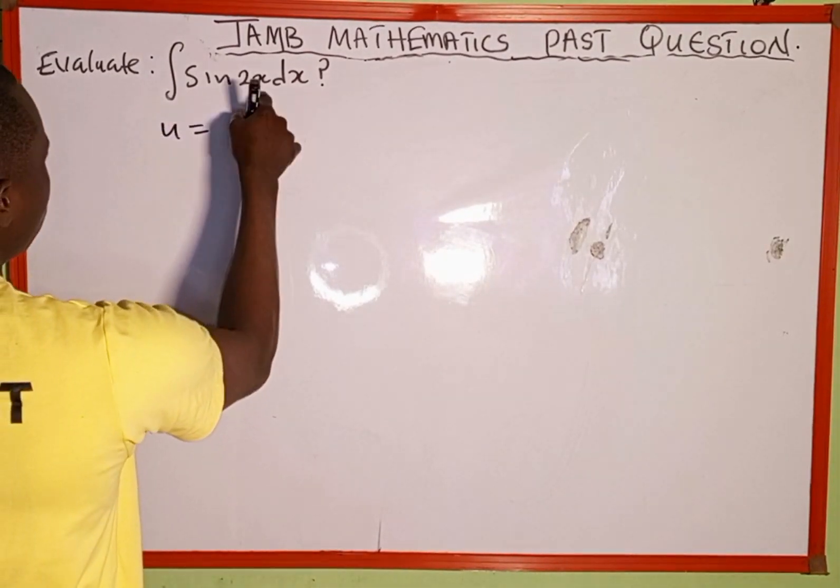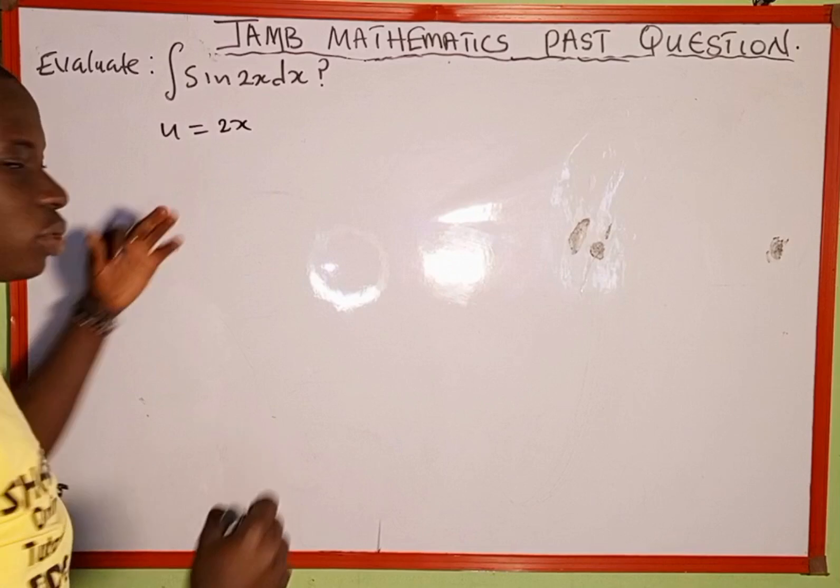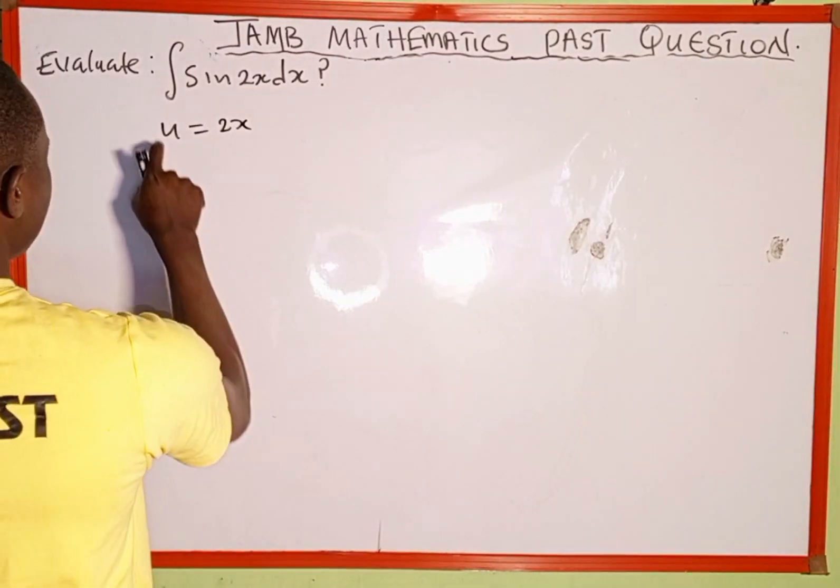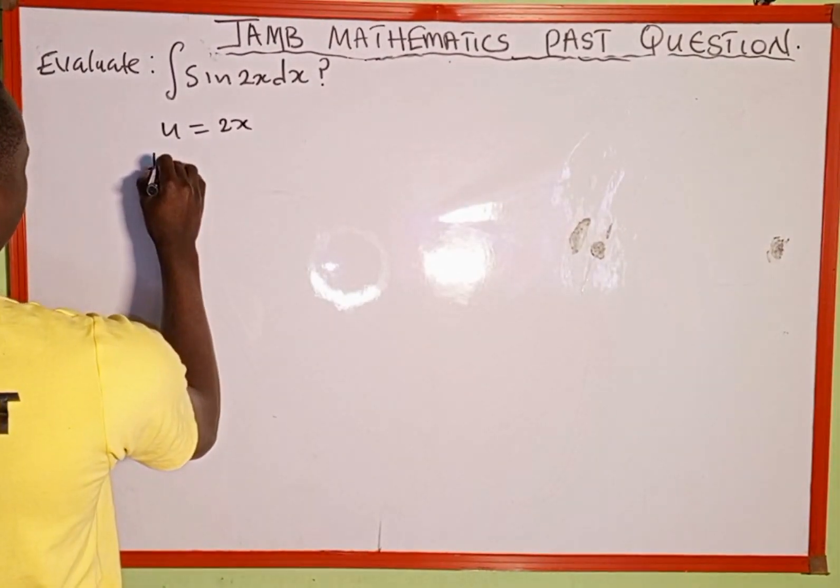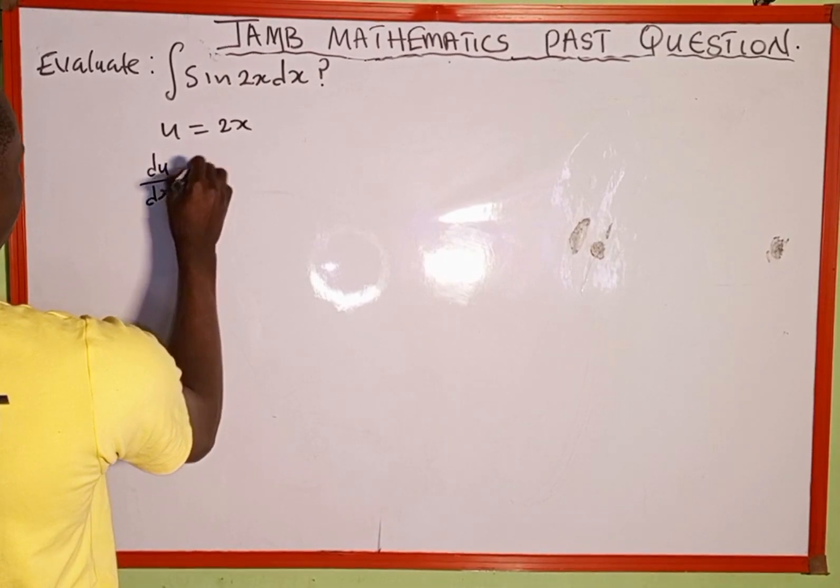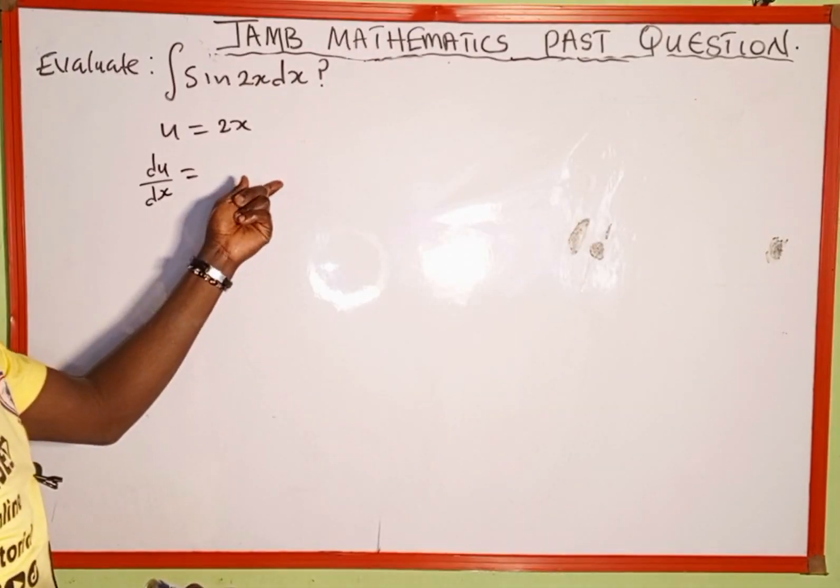Let u equal 2x. Now we're going to differentiate both sides with respect to x. The derivative of u with respect to x is du/dx, which equals the derivative of 2x with respect to x.